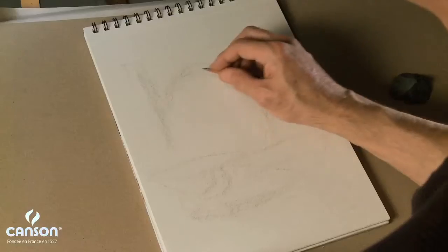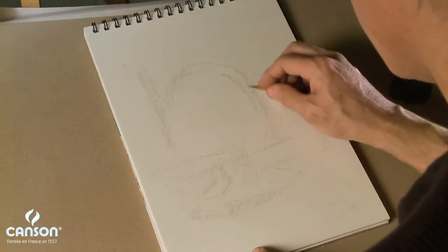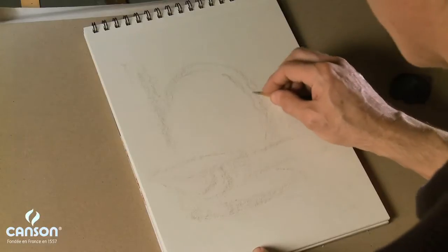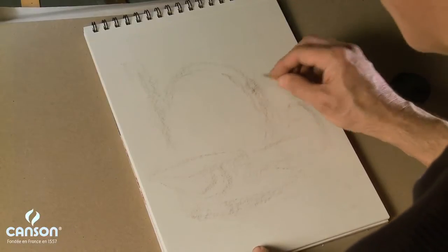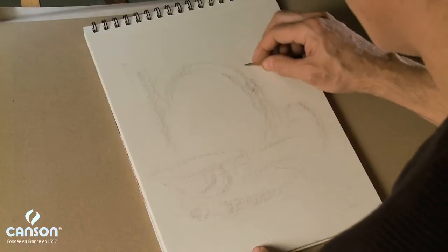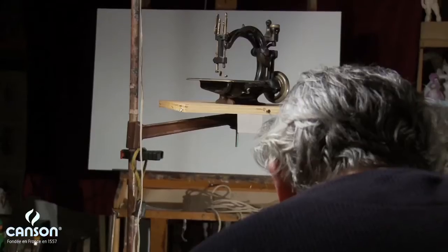And again, trying to keep a very light touch with the pencil. I'd like to let the tooth of the paper, the texture of the paper, do the work. And I'll find a few landmarks on the sewing machine. Very large screw over here. Knob directly above it.